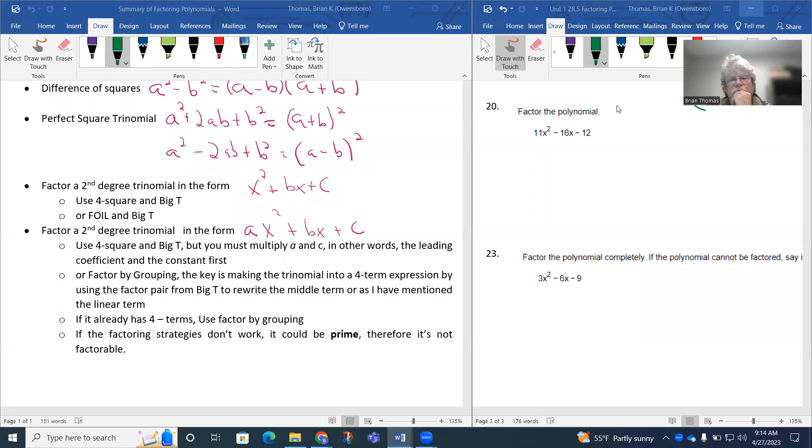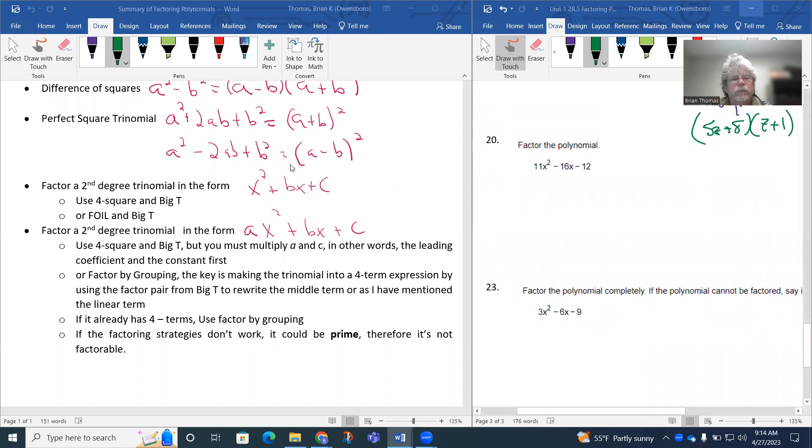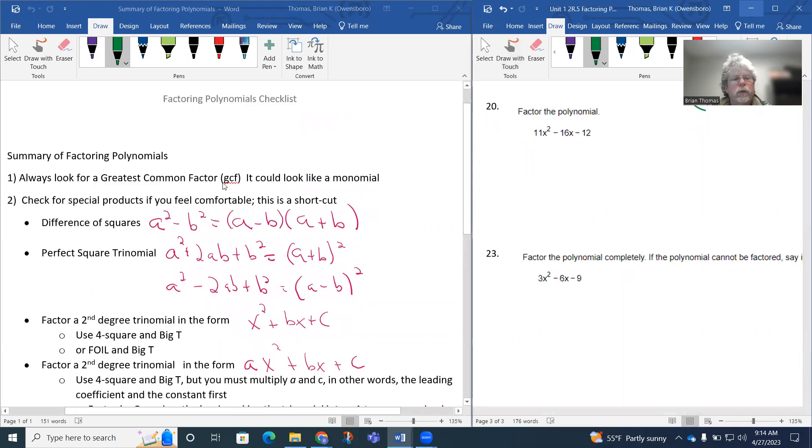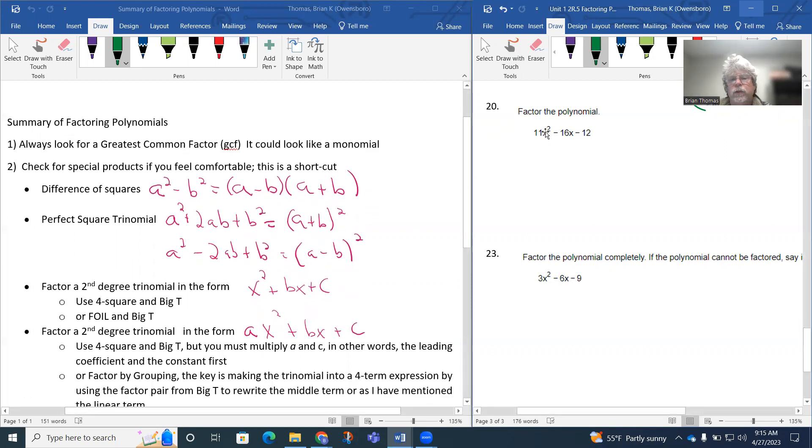So question 20, back to the polynomial. Notice again we have a trinomial, but if we look at our checklist, notice that if we look for a greatest common factor, the 11, the 16, and the 12, there really isn't any wiggle room there. 11 is a prime number and 11 does not go evenly into 16 or 12, so the greatest common factor is not going to work. To be a difference of squares it's got to be two terms. It's not a perfect square trinomial - again, 11 nor the 12 are perfect squares, so that's off the board.